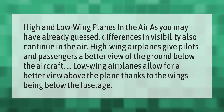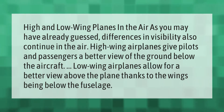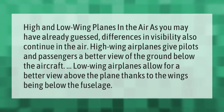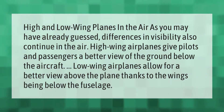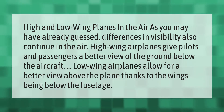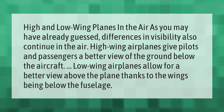High and low wing planes in the air: differences in visibility also continue in the air. High wing airplanes give pilots and passengers a better view of the ground below the aircraft. Low wing airplanes allow for a better view above the plane, thanks to the wings being below the fuselage.